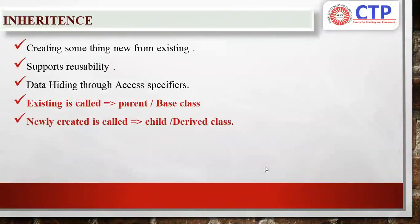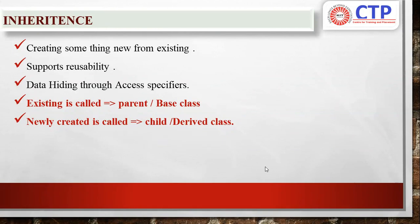Now let me see about inheritance. This is one of the interesting real world things that has been extracted from our real world and put into programming practice. It is the concept of creating something new from existing. We are newer generations, and we are created from our existing forefathers and grandfathers — creating something new from existing. It supports reusability. In inheritance, you can hide your internal data with the help of access specifiers. Any class that already exists is called a parent class or base class, and the newly created one is called a child class or derived class.